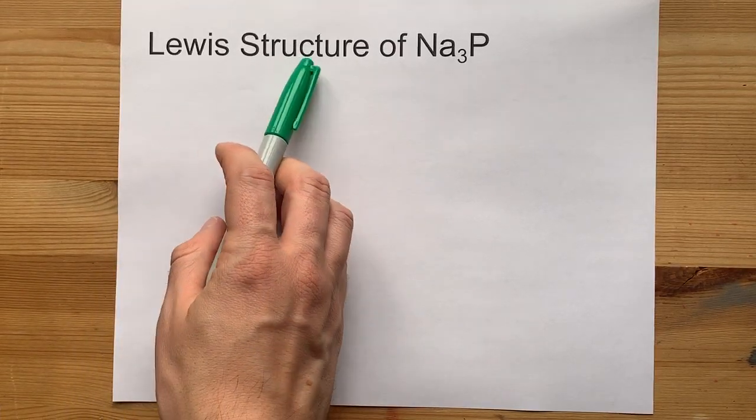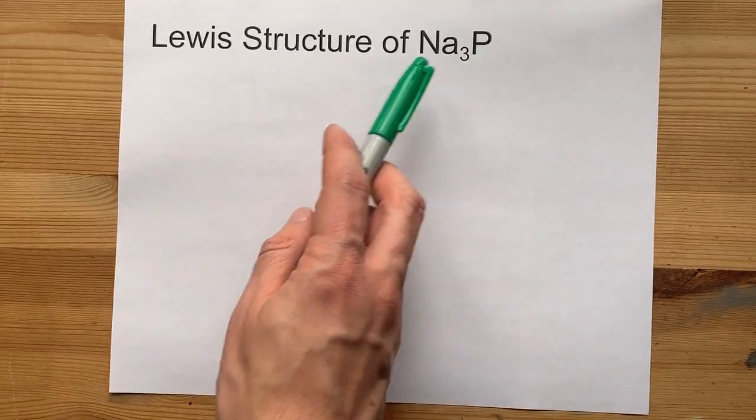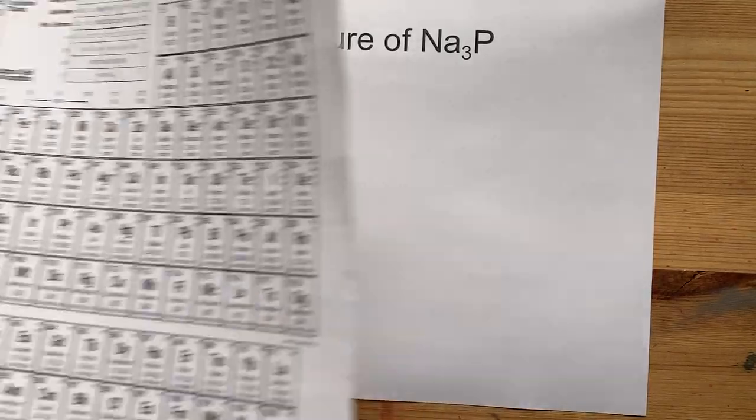Together, let's draw the Lewis structure of sodium phosphide, Na3P.